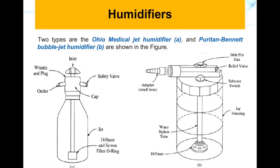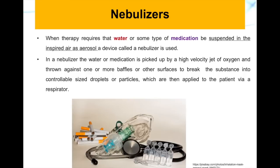We have two main types of humidifiers. The first one is the Ohio Medical jet humidifier, shown in the image to your left, and the other is the Puritan Bennett bubble jet humidifier, shown in the picture to the right. They have different designs, structures, and functions, and they vary in price.